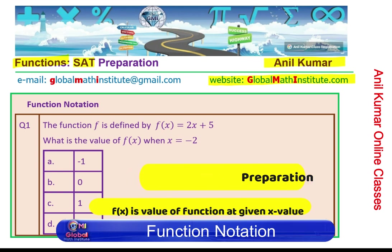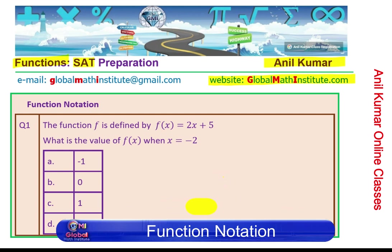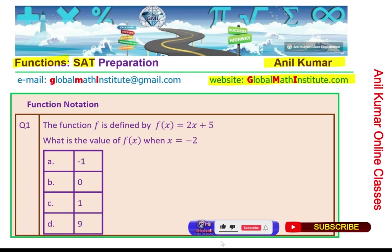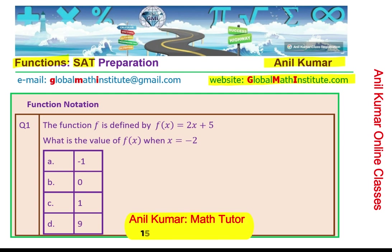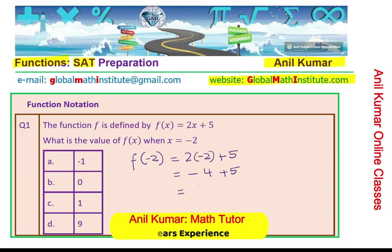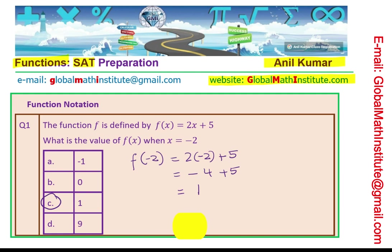Let's look at the very first question to understand function notation. The function f is defined by f of x equals 2x plus 5. What is the value of f of x when x equals minus 2? You can pause the video, answer the question, and then look into my suggestions. f of x is the output. We substitute minus 2 for x and evaluate: we get minus 4 plus 5, which equals plus 1. Therefore option C is the correct answer.